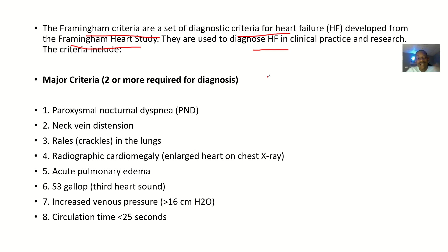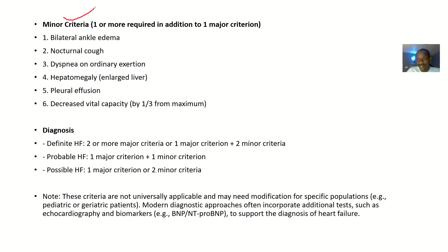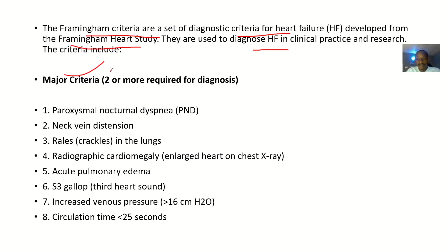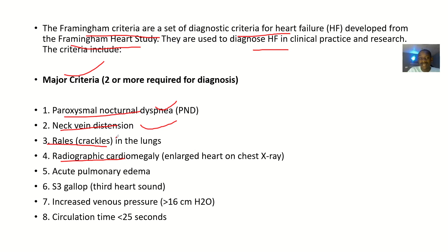The criterias are listed below. For the major criteria, there could be paroxysmal nocturnal dyspnea — that's basically having problems breathing. There could be neck vein distension, crackles in the lungs, and radiographic cardiomegaly — that's an enlarged heart on x-ray. So if you do an x-ray and see an enlarged heart, those are the major criterias.